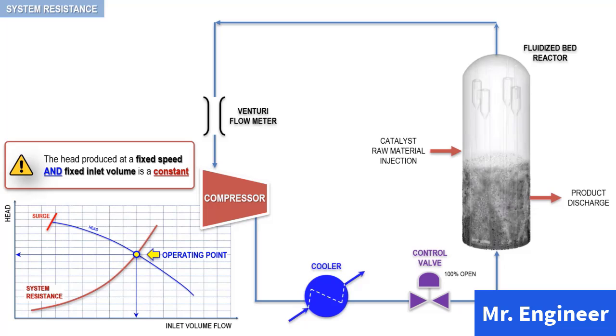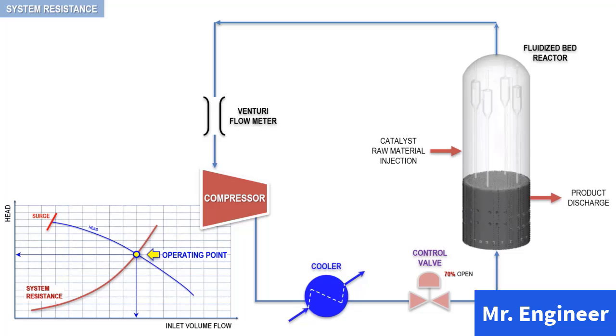An important point to remember is that the system resistance curve can change and will certainly do. For example, throttling the discharge valve to 70% will increase the system resistance, which will result in a steeper curve, as highlighted here.